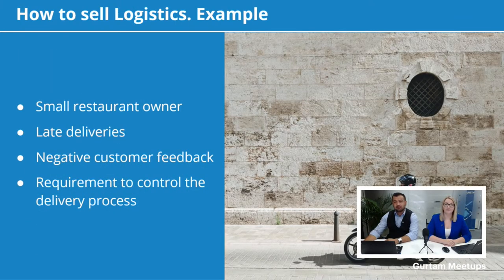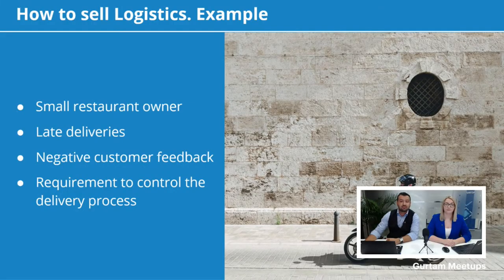Moving further, let me share a quick example of how to sell our Logistics application. As you know, it's a dispatch system that can control the entire order process. Let us imagine selling this application to a restaurant owner who has his own motorcycles and purchased a basic solution from you. Some small chains do food delivery on their own without outsourcing it to services like Uber Eats. Delivery drivers can be late or deliver to the wrong place — all of these factors can affect the image of the restaurant and decrease their margins. Our Logistics application can help a restaurant have convenient control of the food delivery process and reduce the risk of losing a valuable customer base.